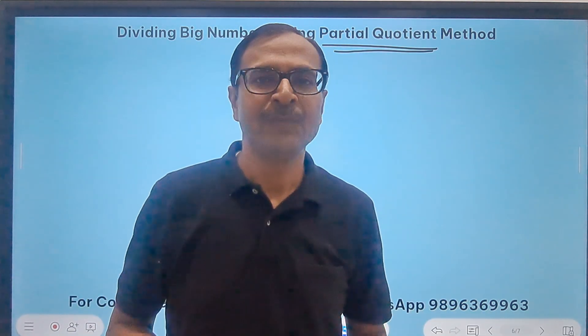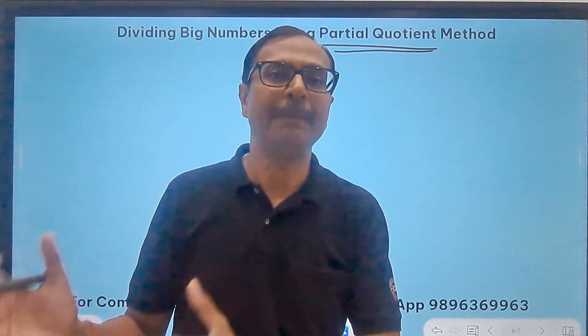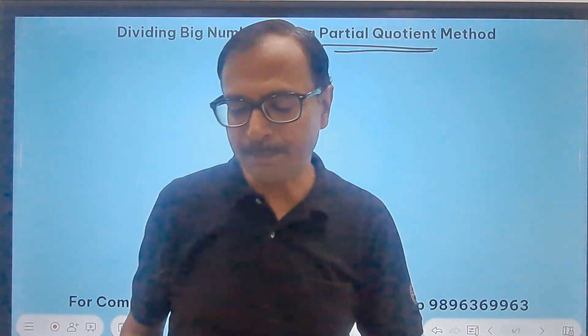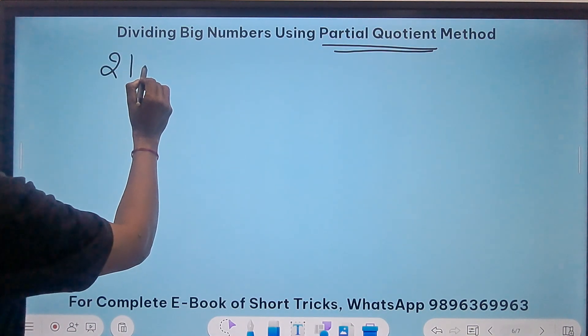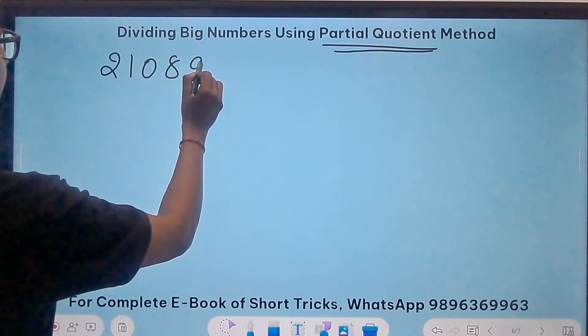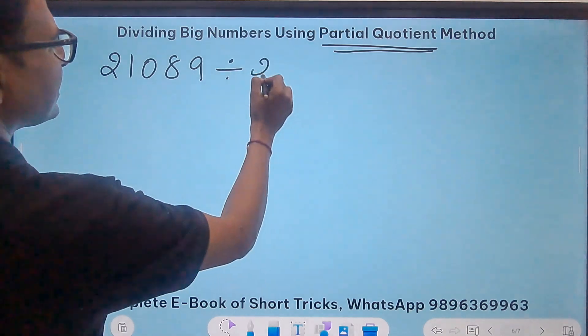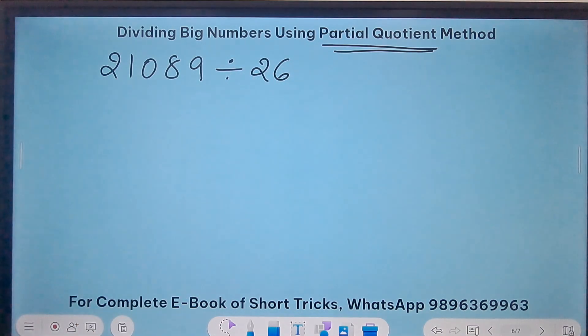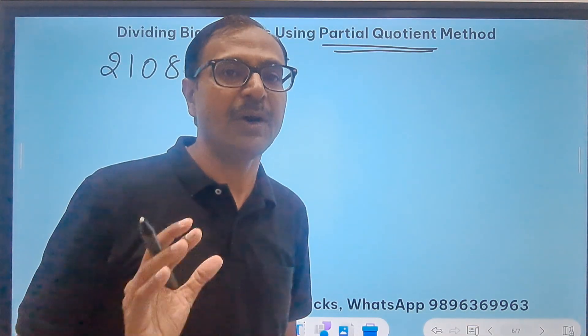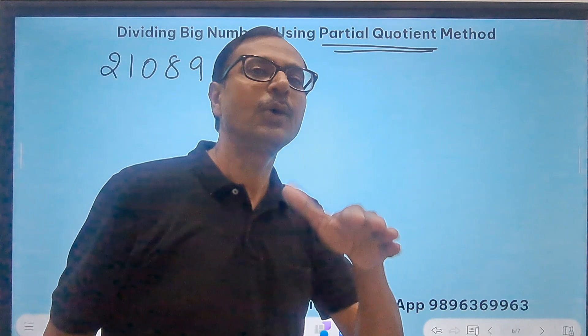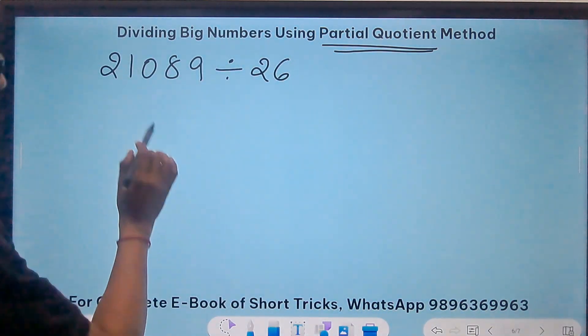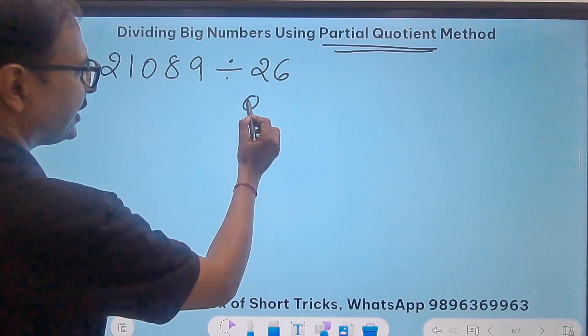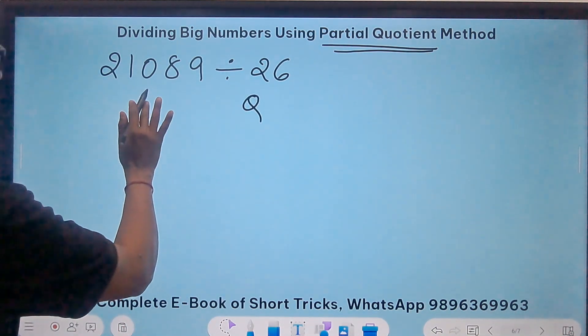Let's get going and understand how big divisions can be simplified using this amazing partial quotient method. I'll take the first example wherein I'm going to do 21089 divided by 26. We don't know the 26 times table, right? So I'm going to simplify this and show you how this method works to find the remainder and the quotient.